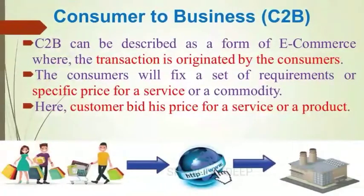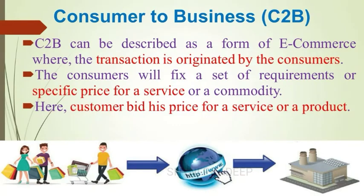The next category is consumer to business. Consumer to business can be described as a form of e-commerce where the transaction is originated by the customer. The consumer fixes a set of requirements or a specific price for a service — the customer bids his price for a service or product. For example, in a travel website, a consumer may specify dates of travel, source and destination, number of tickets required, and range of hotel. The website then finds various options that best meet his requirements. These websites generate revenue through affiliate links, sponsored advertisements, or a small commission on every booking.